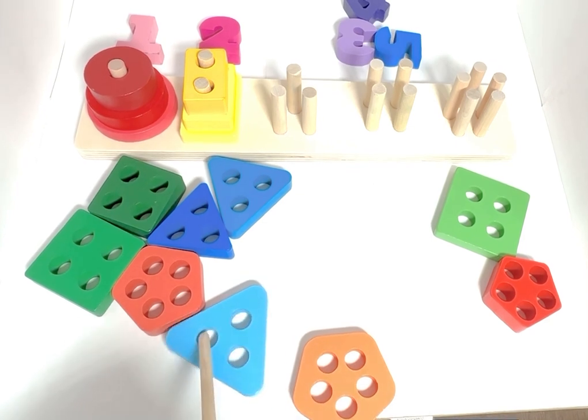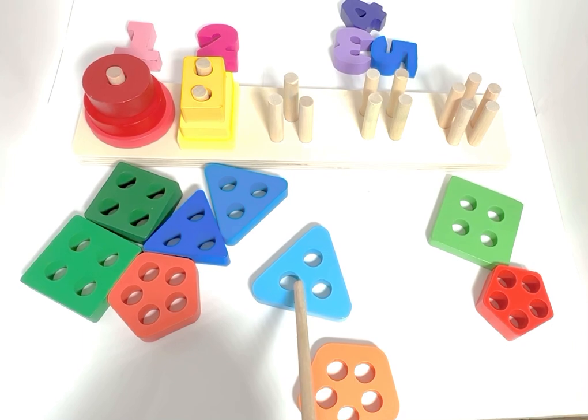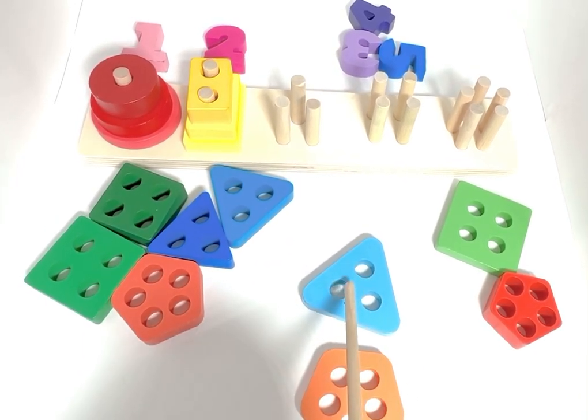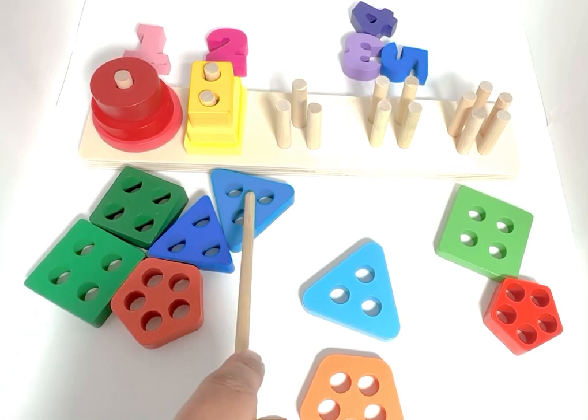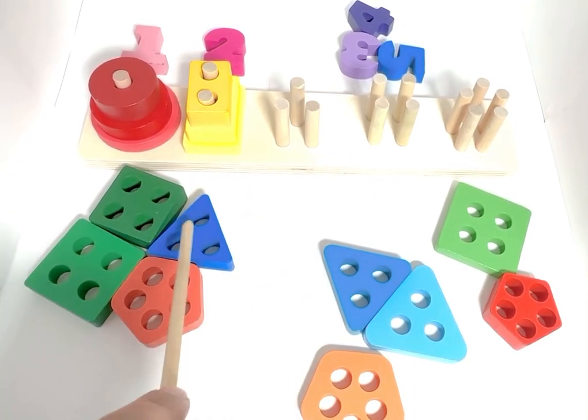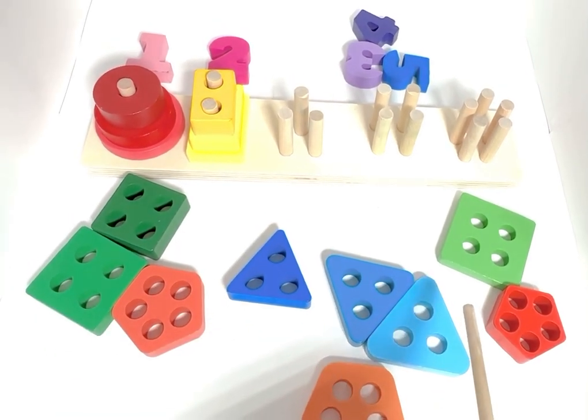One, two, three. Yes, this is the one. It's a blue triangle. Let's see other blue triangles if they have three holes as well. One, two, three. Yes. One, two, three.